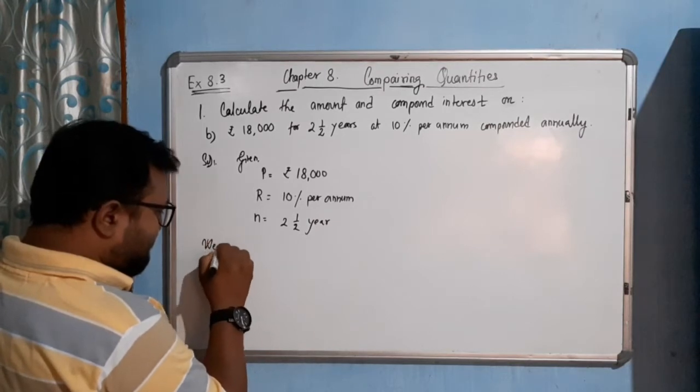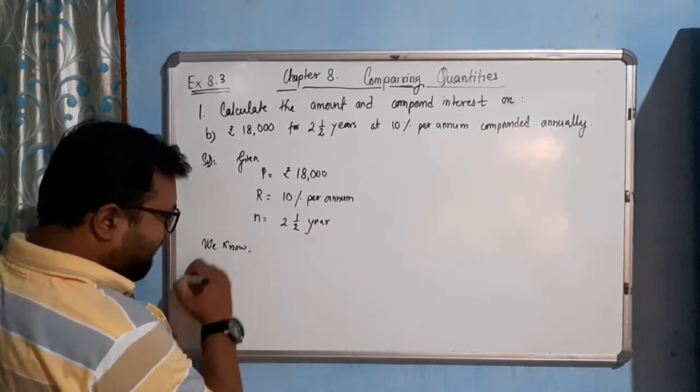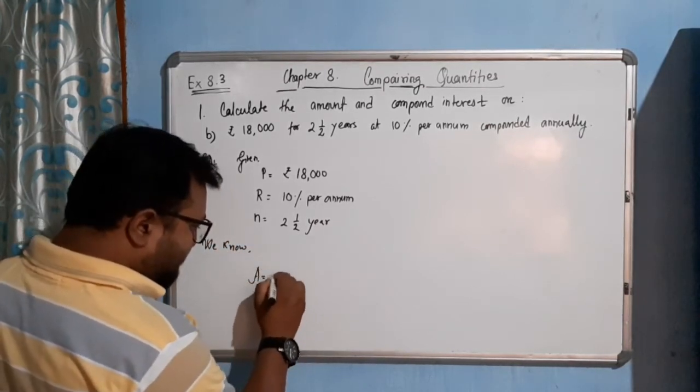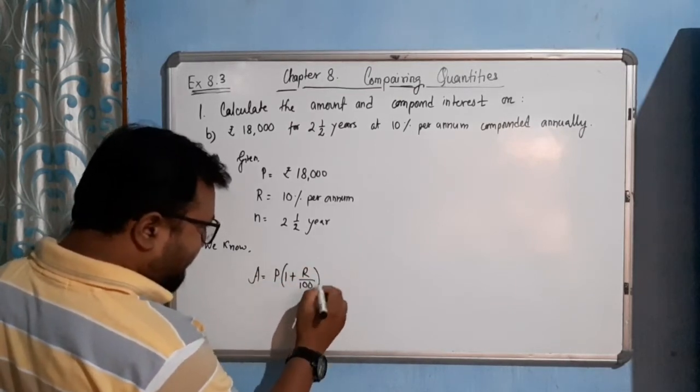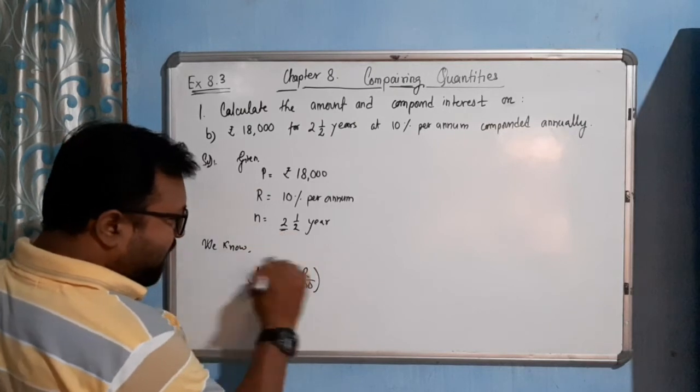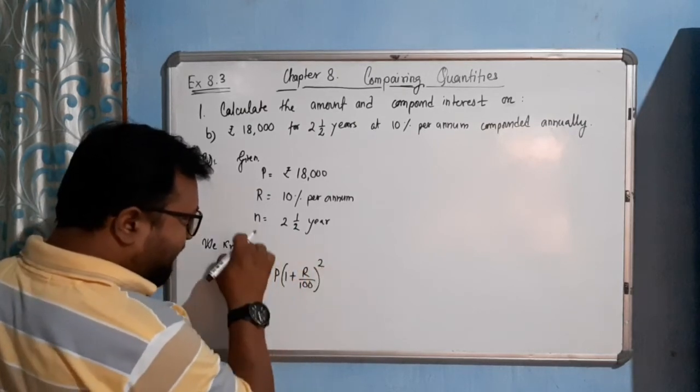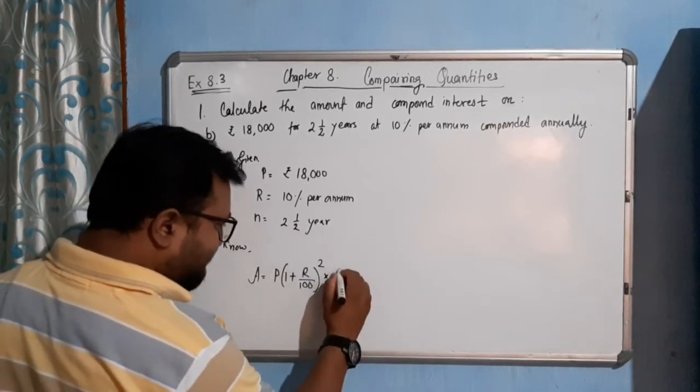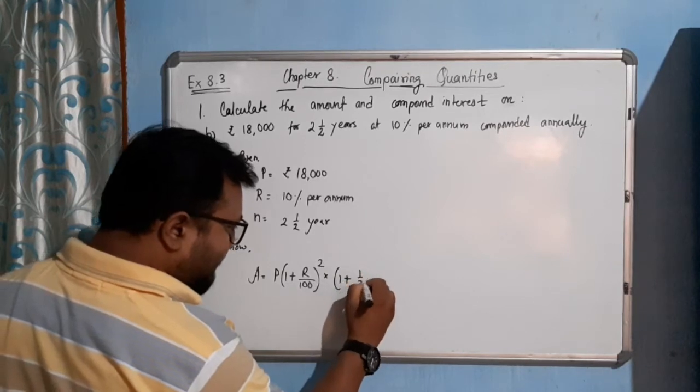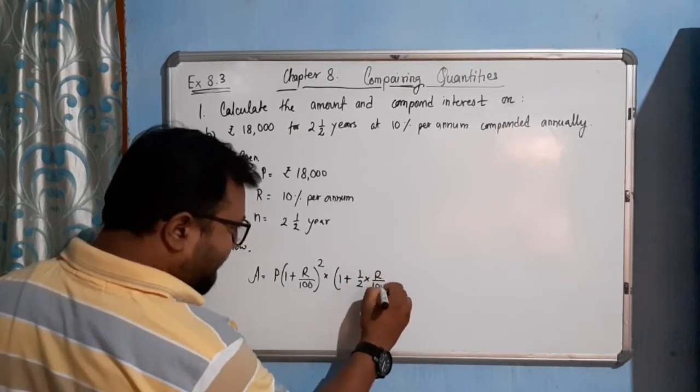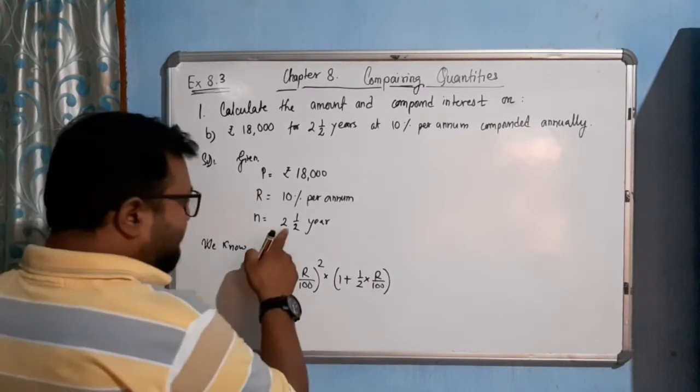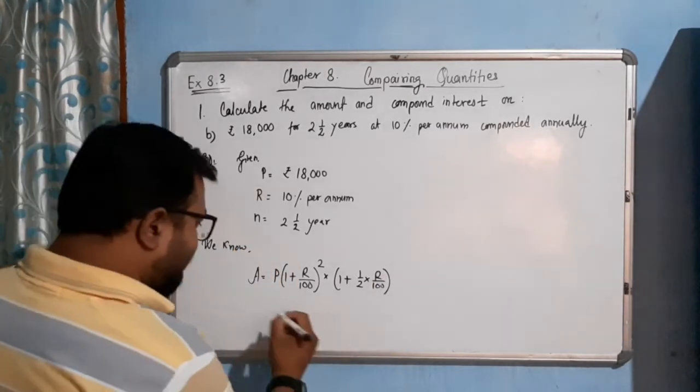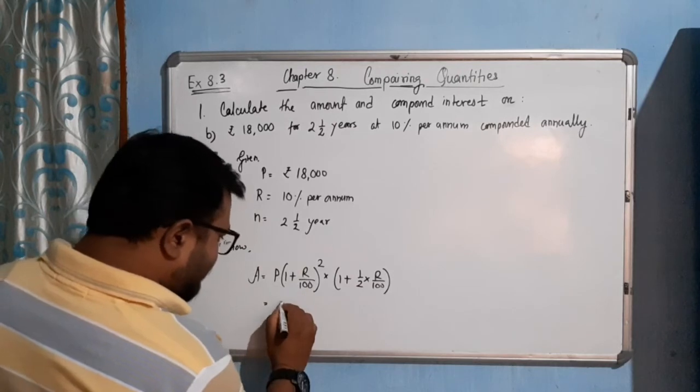Therefore, we know for fraction of years, we know the formula. A equals how much? P into (1 plus R by 100), and this whole number two will come here. And this fraction, 1 plus half into again R by 100. In this way we will use the formula. I already explained in my earlier videos.